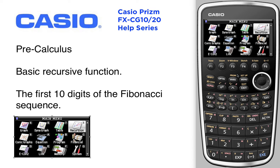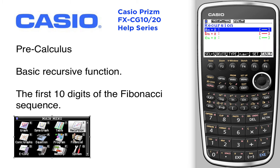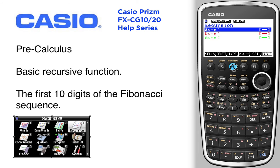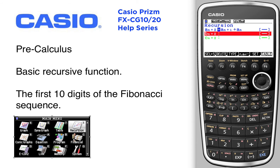Let's use the recursive menu to find the first 10 digits of the Fibonacci sequence. See what different types we have — we're going to choose F3. The Fibonacci sequence uses aₙ₊₁ plus aₙ to find aₙ₊₂.